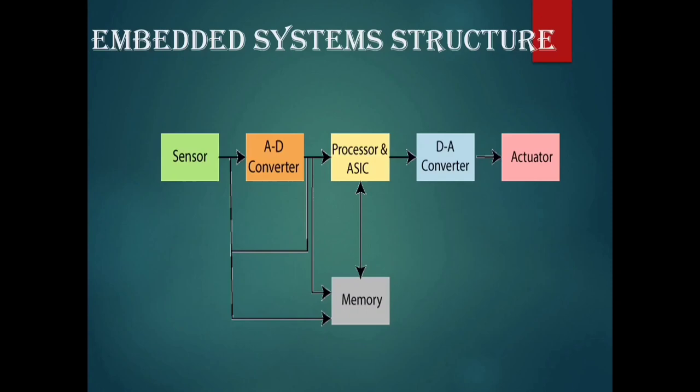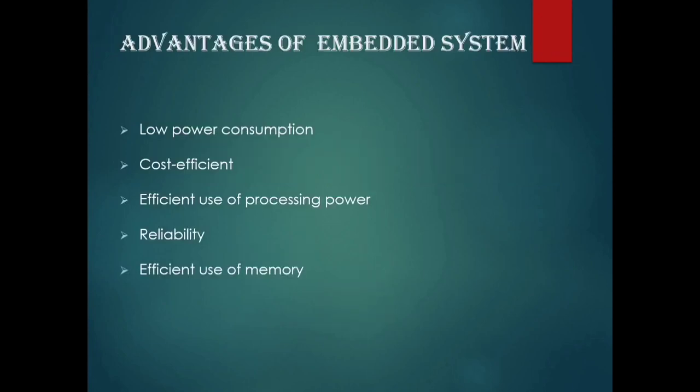Embedded Systems Structure: The structure includes a sensor, analog-to-digital converter, processor, digital-to-analog converter, actuator, and memory — which includes RAM and ROM. Advantages of embedded systems include low power consumption, fast and efficient operation, efficient use of processing power, reliability, and very efficient use of memory.